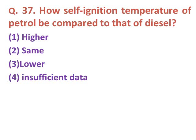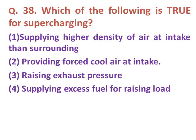Question thirty-seven: How does the self-ignition temperature of petrol compare to that of diesel? Option one: higher. Option two: same. Option three: lower. Option four: insufficient data. The correct answer is option one — the self-ignition temperature of petrol is higher than that of diesel.